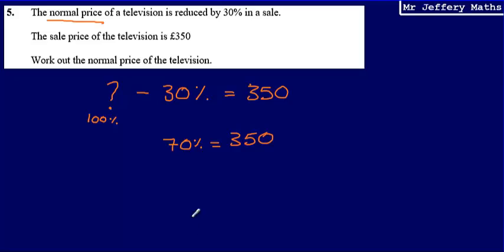From here, what I need to do is I need to get back to this 100%, the amount that I began with. So in order to do that, what I'm going to do is work out what 1% will be. I need to get from 70% to 1%. And the way that I'm going to do that is I'm going to divide by 70.